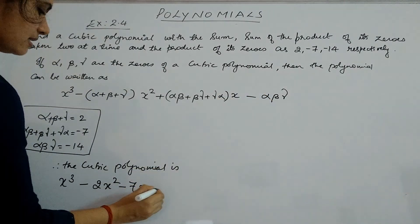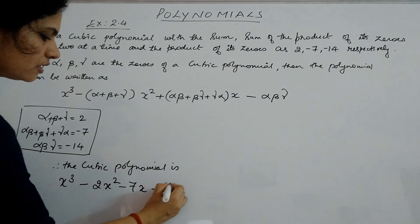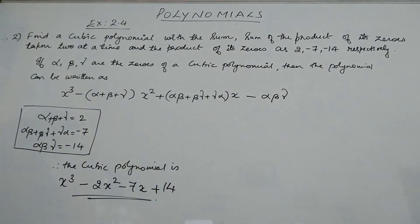And this is minus αβγ. Since αβγ is -14, this becomes -(-14) = +14. So your cubic polynomial is x³ - 2x² - 7x + 14.